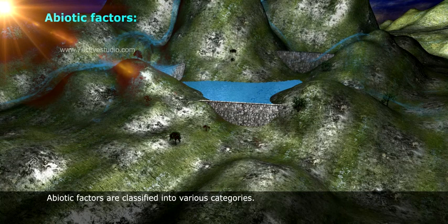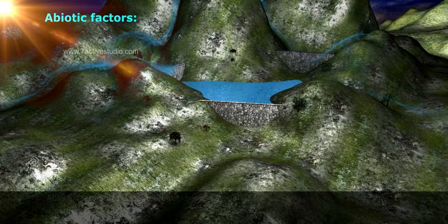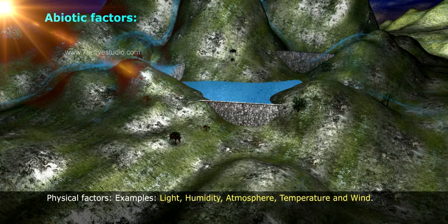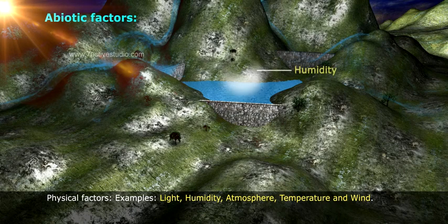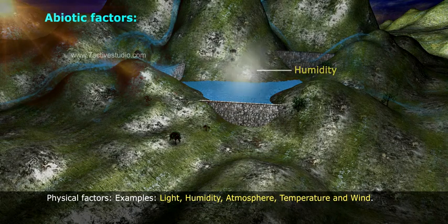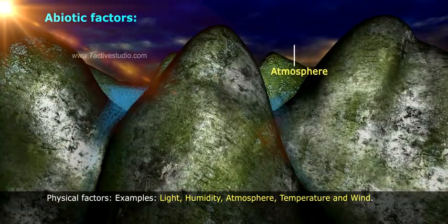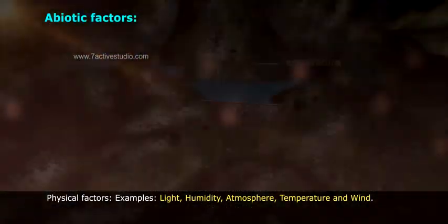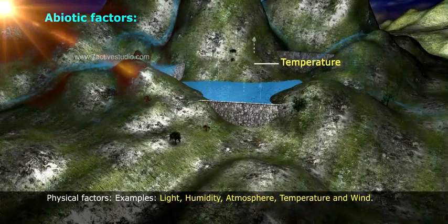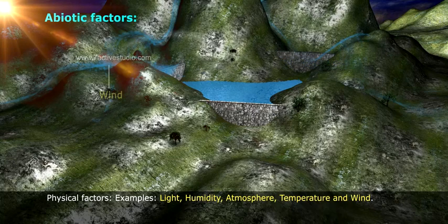Abiotic factors are classified into various categories. Physical factors include light, humidity, atmosphere, temperature, and wind.